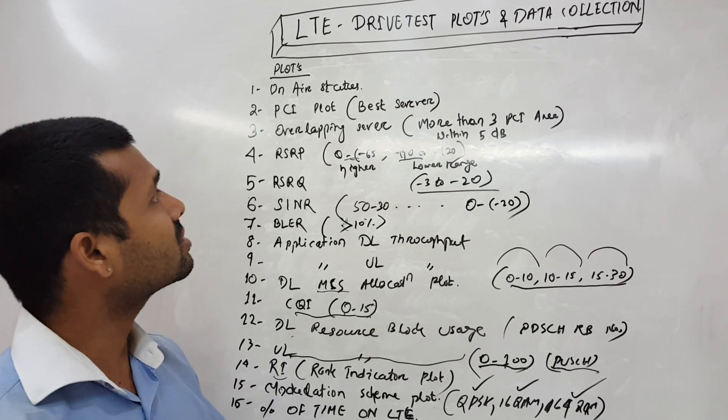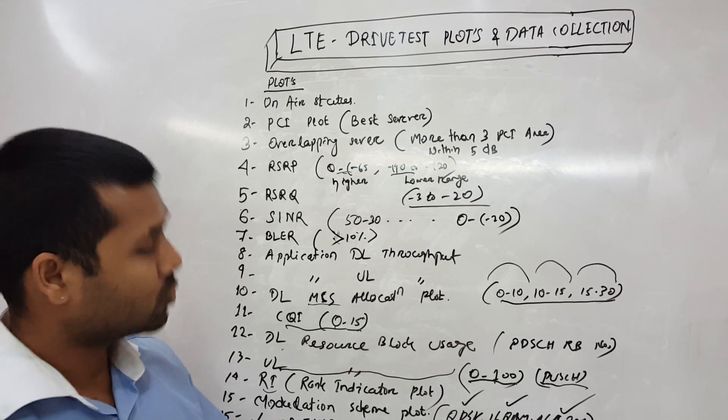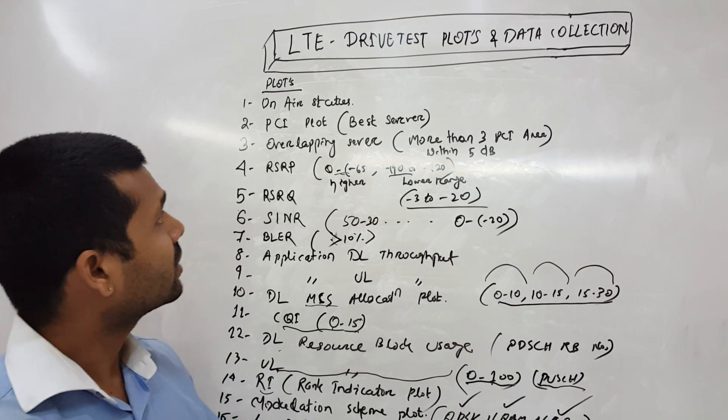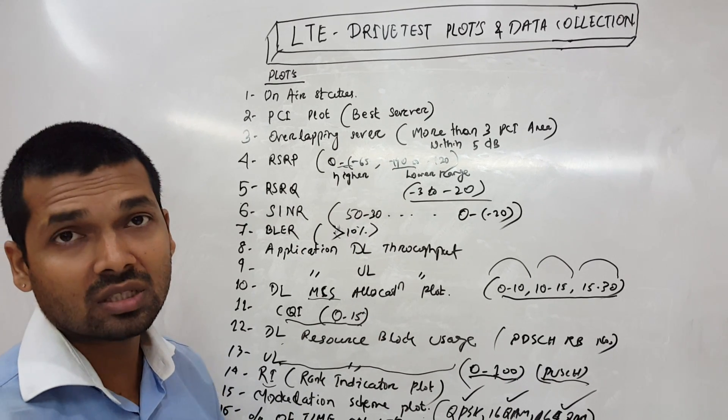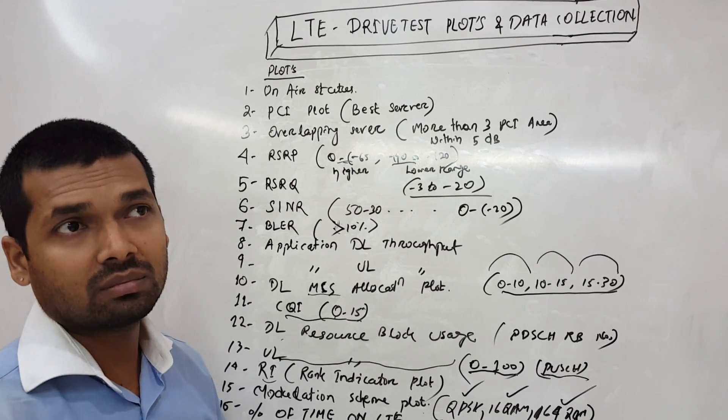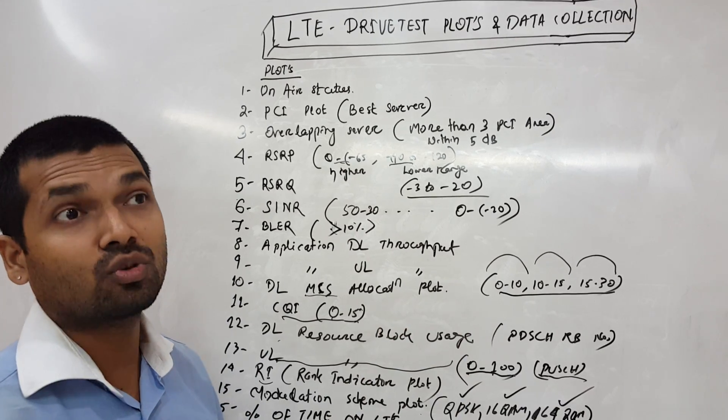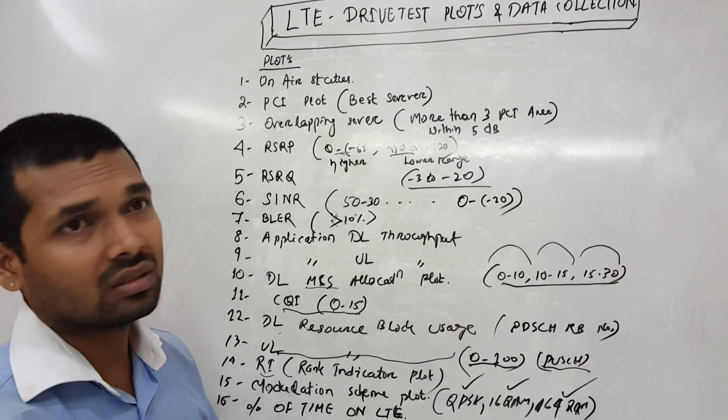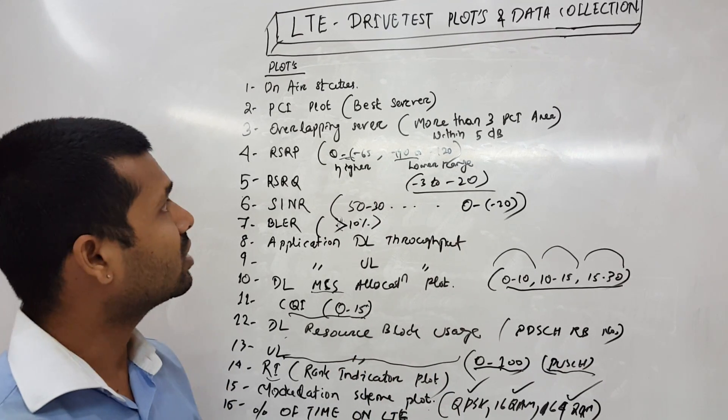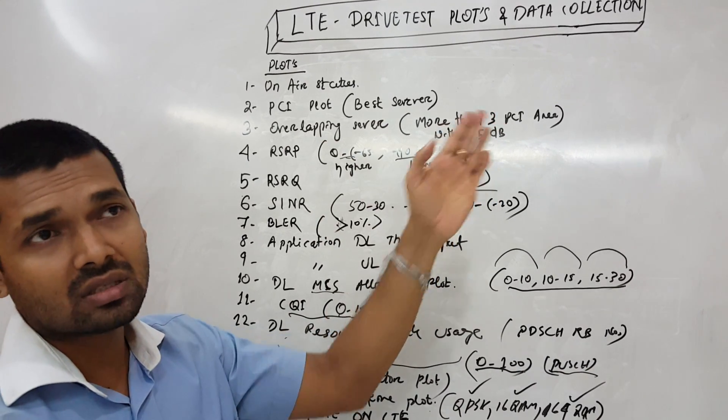Then we should have overlapping server. That means if we are getting more than 3 PCIs anywhere, more than 3 PCIs within a range of 5 dB, that would be the optimization area basically. So we should collect that plot wherever we are having this kind of pilot pollution.